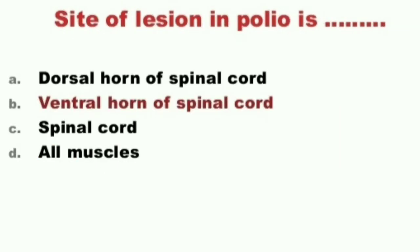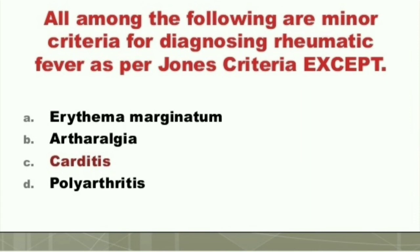Question: The site of lesion in polio is: A) Dorsal horn of spinal cord, B) Ventral horn of spinal cord, C) Spinal cord, D) All muscles. Next question: All of the following are minor criteria for diagnosing rheumatic fever as per Jones' criteria except: A) Erythema marginatum, B) Arthralgia, C) Carditis, D) Polyarthritis. The answer is C) Carditis, which is a major criterion for rheumatic fever.